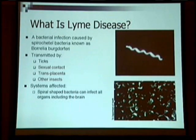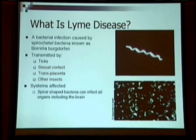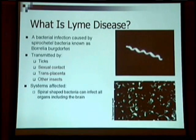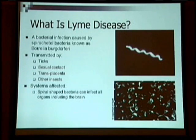Interestingly, Lyme disease affects all organs, including the brain, because the spiral-shaped bacteria — which you can see in the top right picture — acts a lot like a drill. It looks like a drill bit, and it can literally drill its way through lots of tissues that other bacteria and organisms cannot get into.